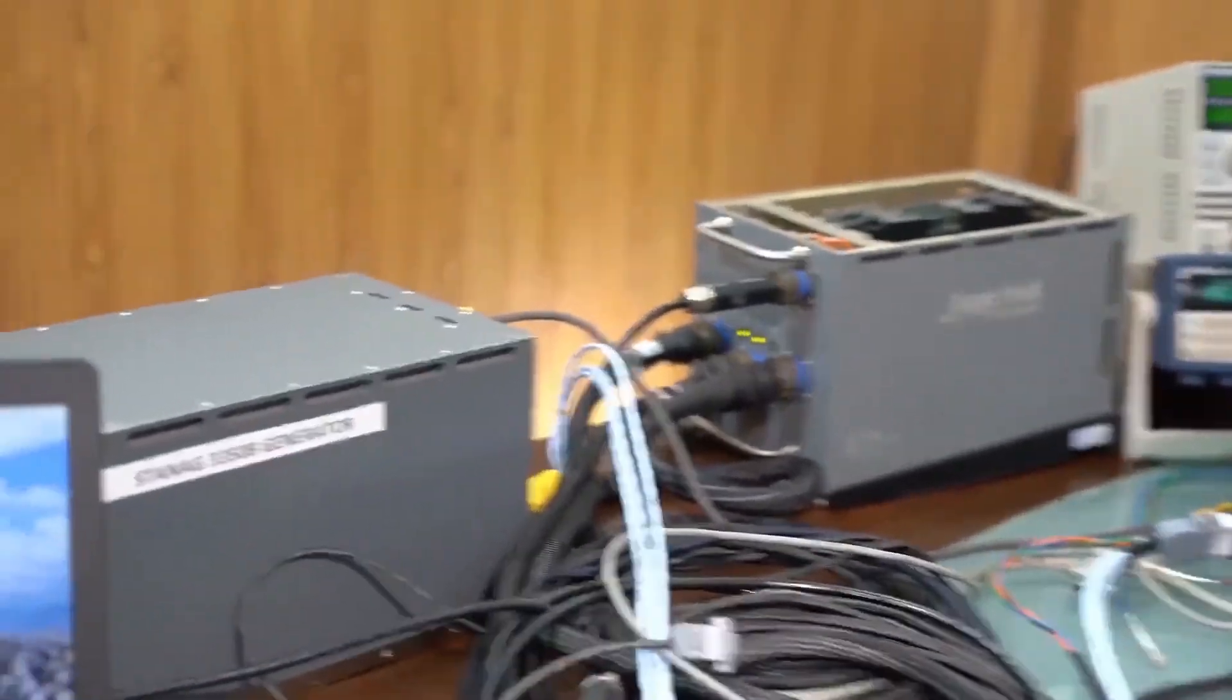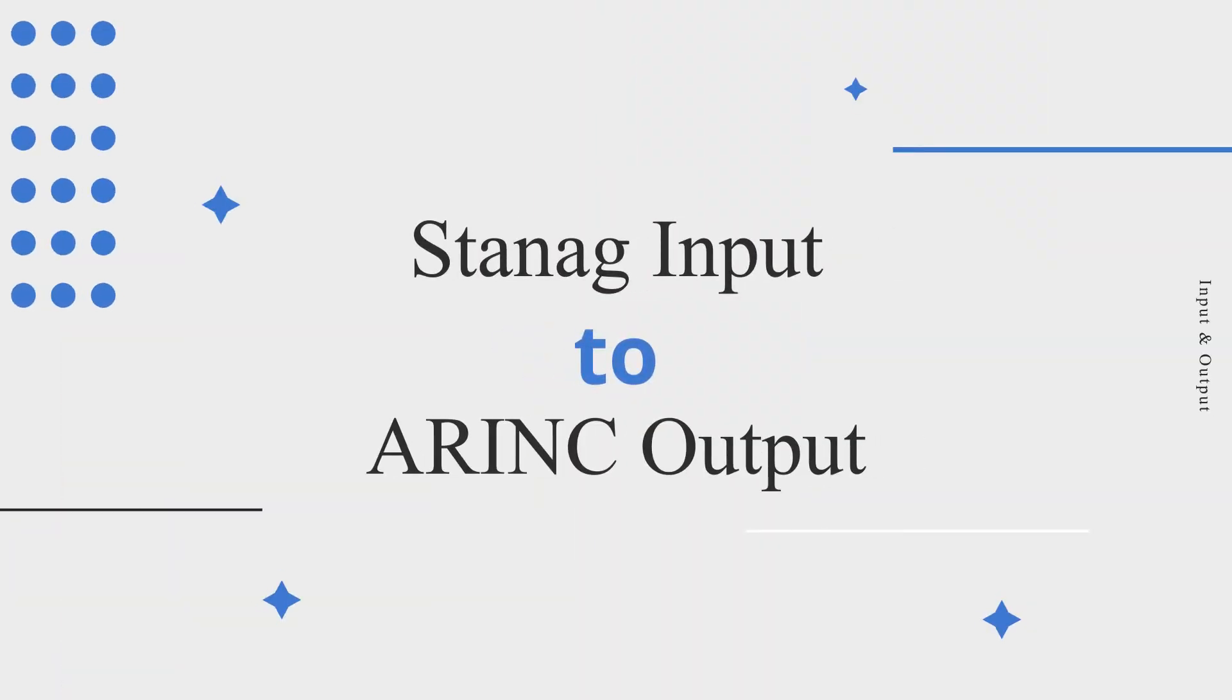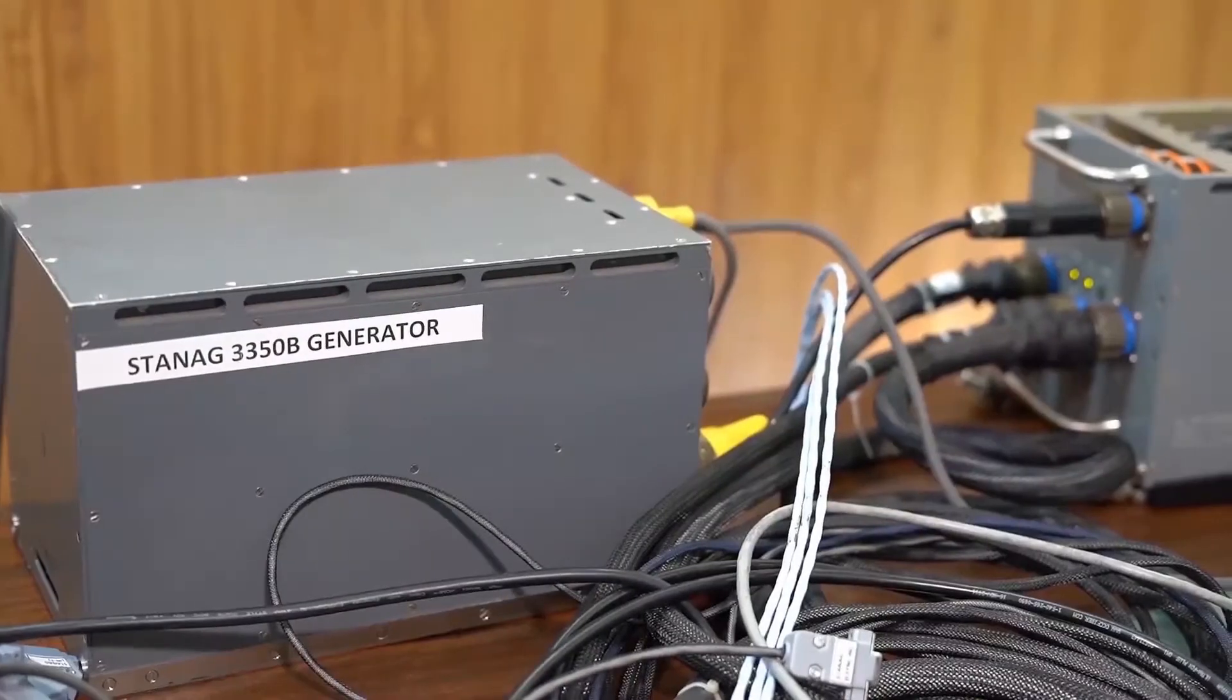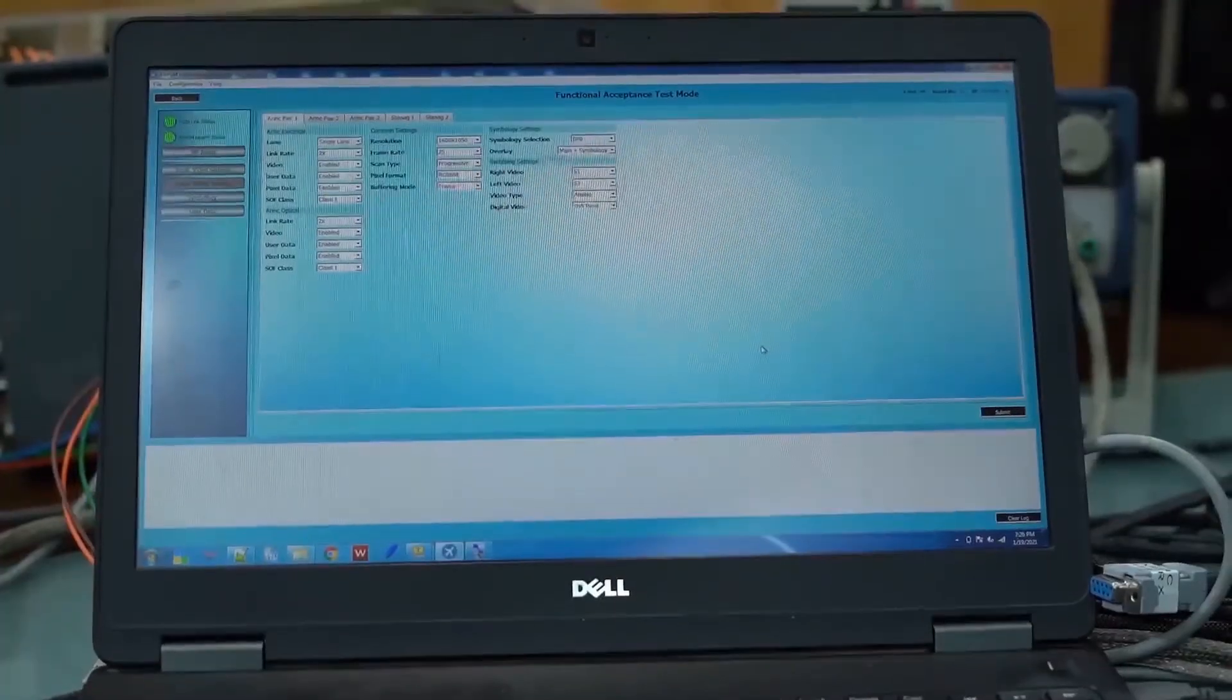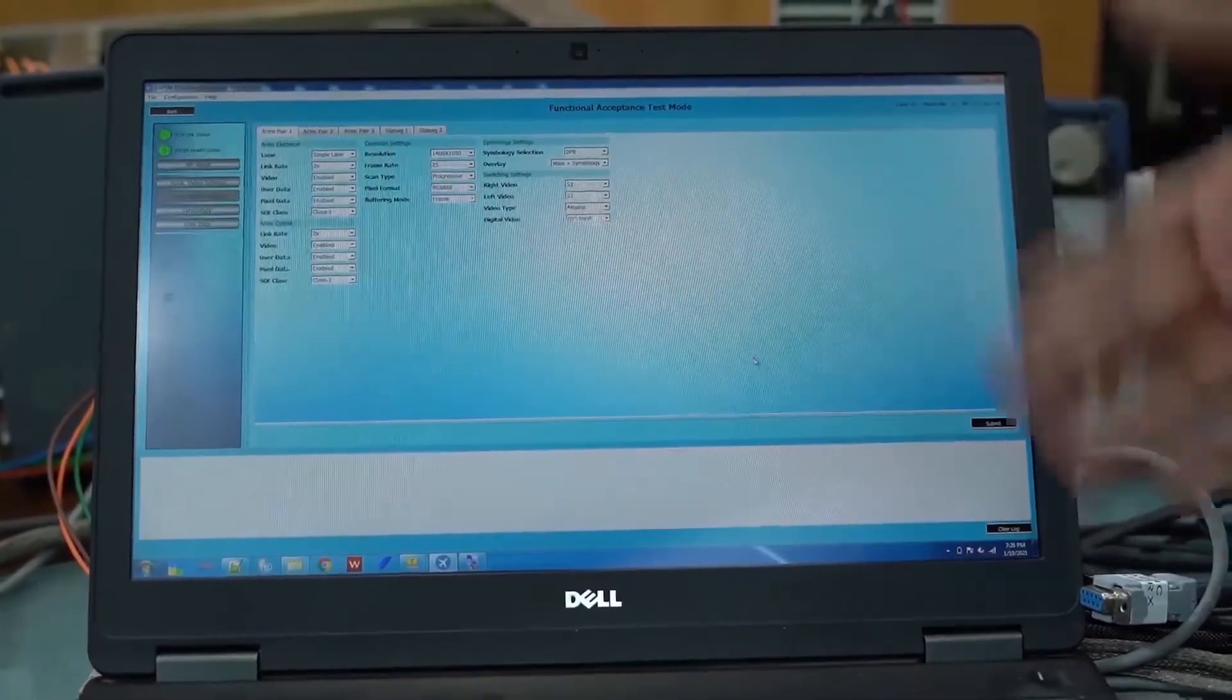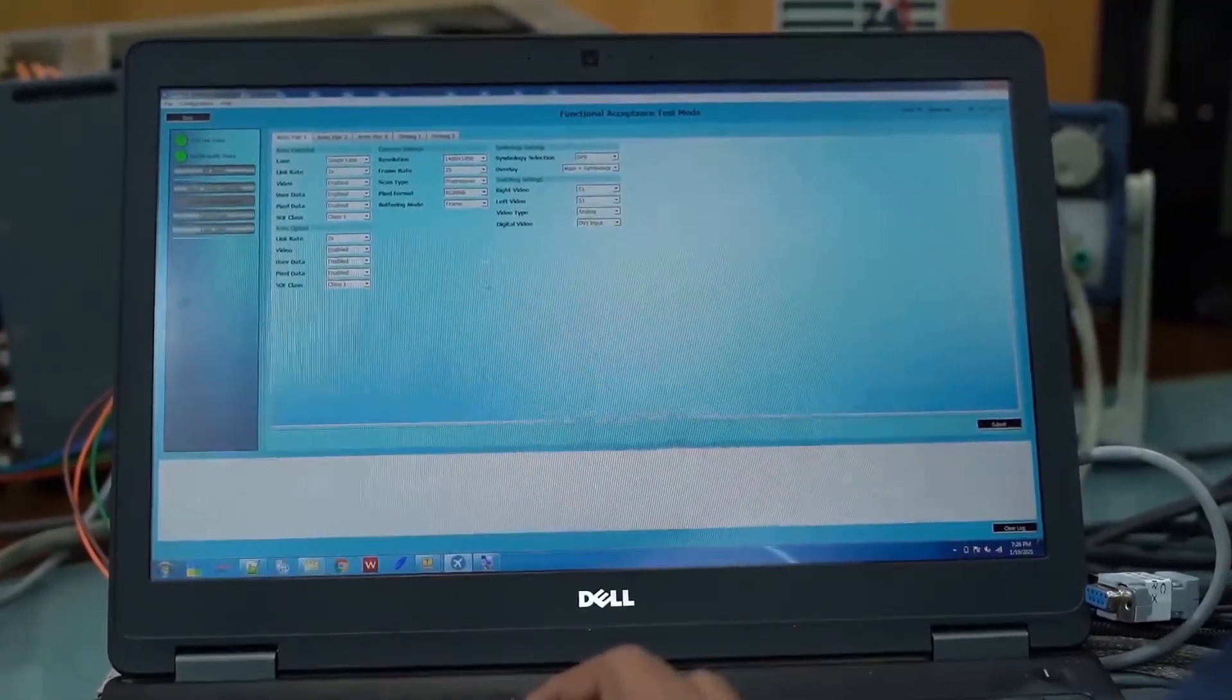Now I'm going to demonstrate another scenario where input is given from the stannic input and output is given by the airing output where it will merge the same stannic input video at two places. This is the GUI interface which is used to configure this setting.